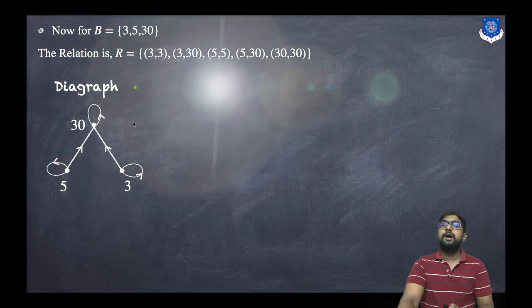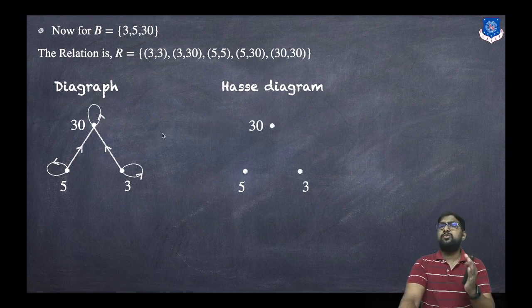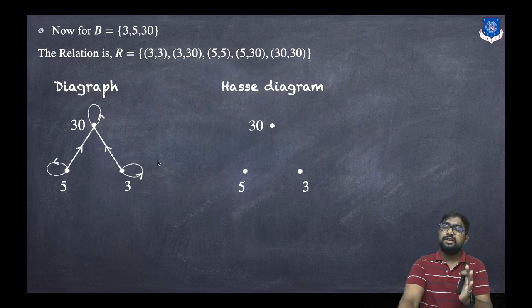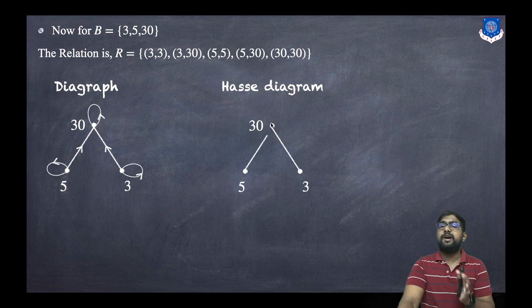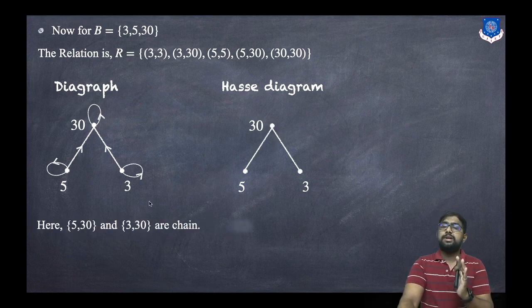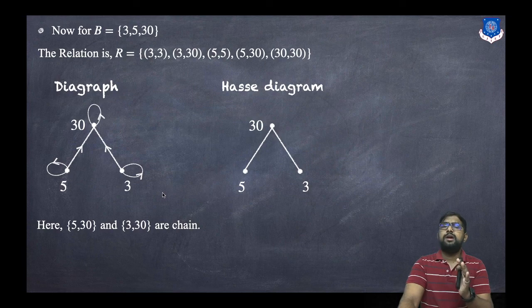For the Hasse diagram of {3, 5, 30}, we remove self-loops. There are no transitive edges, so we simply have edges 3–30 and 5–30. Now, {5, 30} and {3, 30} are both chains because their elements are related. The elements 3 and 5, however, are not related to each other, so {3, 5} is an anti-chain.